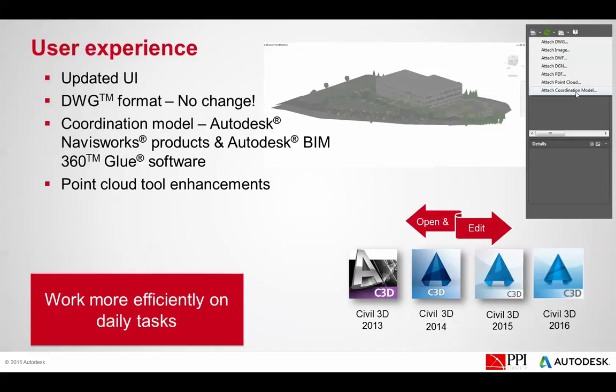There are additions to the pipe catalogs as you go along, so make sure you have the proper catalog for the drawing you're working on. We can also bring in coordination models from Navisworks or BIM 360 Glue — either NWD or NWC models — and navigate around within those models, adjusting shading and transparency. There are also enhancements within Civil for point clouds, including new ability for creating surfaces from those point clouds.